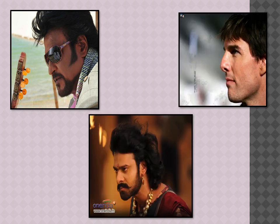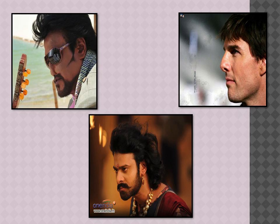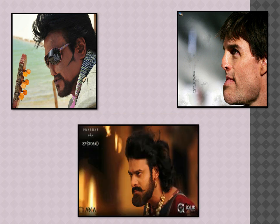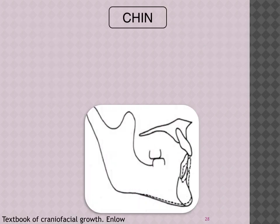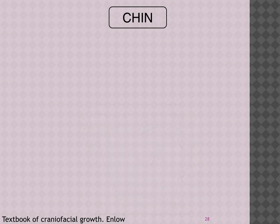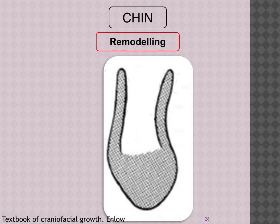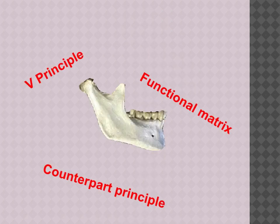The chin — the symphysis — is very peculiar to human beings, only present in humans, and is more prominent in males. Looking at the remodeling that makes it prominent with age: we want resorption on the outside and deposition on the inside to maintain bone width and add bone anteriorly, giving the chin its characteristic projection. Negative signs outside and positive signs inside achieve this prominent chin morphology.